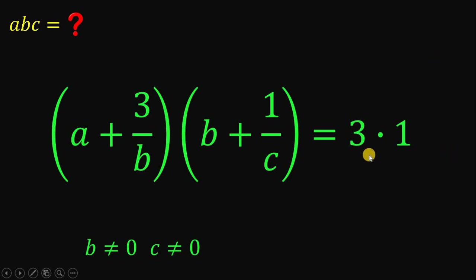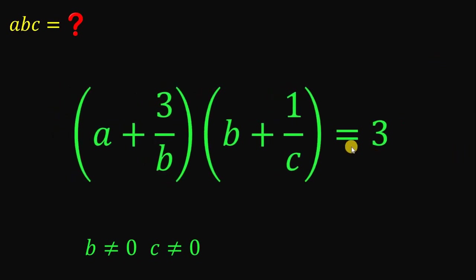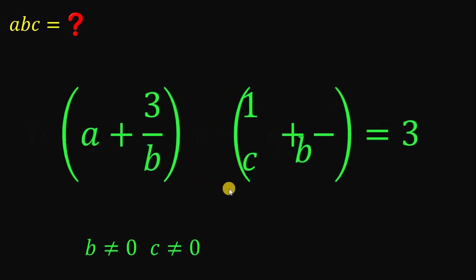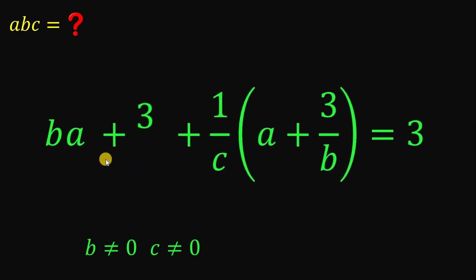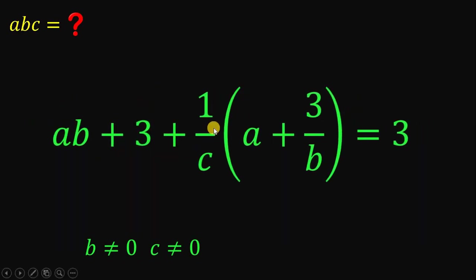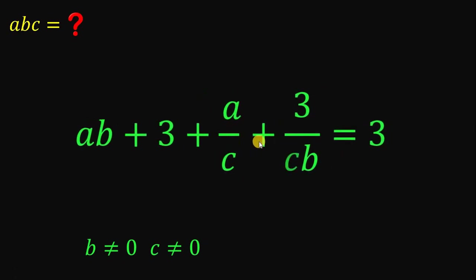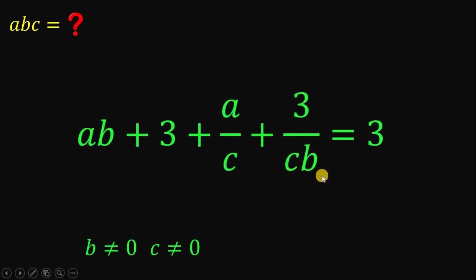On the right-hand side, this is just 3. On the left-hand side, I'll use chunk multiplication. This gives us b multiplied by a plus 3 over b, plus 1 over c multiplied by a plus 3 over b. Distributing b gives us ab plus 3. Distributing 1 over c gives us a over c plus 3 over bc.